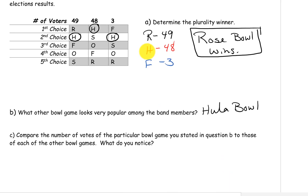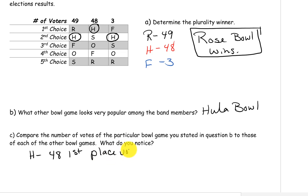Next, we want to compare the number of votes of the particular bowl game stated in question B to those of each of the other bowl games — and what do we notice? Taking a look at the Hula Bowl, we see that it has 48 first place votes and it has 49 plus 3, which is 52 second place votes.